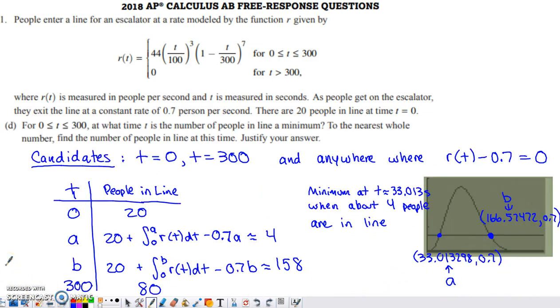The final part is asking us for when the number of people in the line is a minimum to the nearest whole number. Find the number of people in line at this time and justify your answer. Since there is always going to be a certain number of people in line, a positive number or zero, we are able to say that the function that represents the number of people in line is continuous. Therefore, we're guaranteed to get both a maximum and a minimum value for the number of people in line on the interval from 0 to 300.